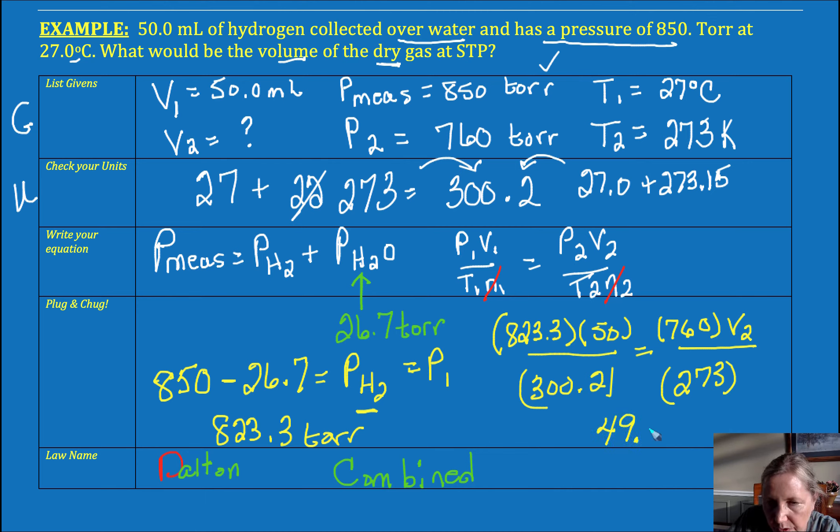So if you do that math, you get 49.3, or I did, milliliters. And I went to 3 sig figs here. So this temperature ended up at 4 sig figs, but it doesn't matter because the original pressure and volume limited me to 3 sig figs.